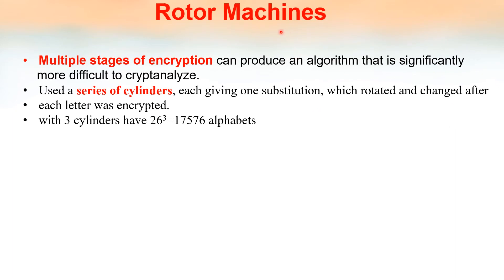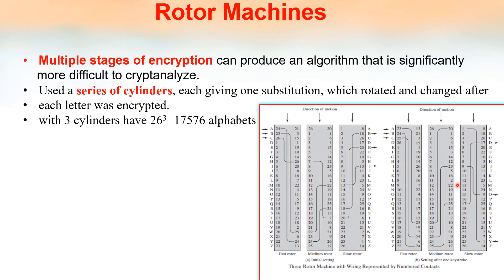The next type is the rotor machine. It is a type of machine in which multiple stages of encryption are used. The plaintext is encrypted first, then encrypted again — encryption is done in multiple stages. In this example, three cylinders are used. Each cylinder, while rotating, provides one substitution, which rotated and changed after each letter was encrypted.